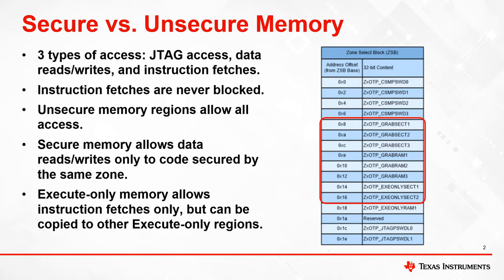When a memory region is designated as execute-only by one of the two zones, all data reads and writes are blocked in that region. In our previous example, this would mean code running from Flash Sector 1 would not have data read or write access to any memory in Flash Sector 0 or 1. There is one exception: if a user wishes to copy code from Flash to RAM for faster execution, and two memory regions are designated as execute-only by the same zone, the user can copy code between them using the Secure Copy Code function.